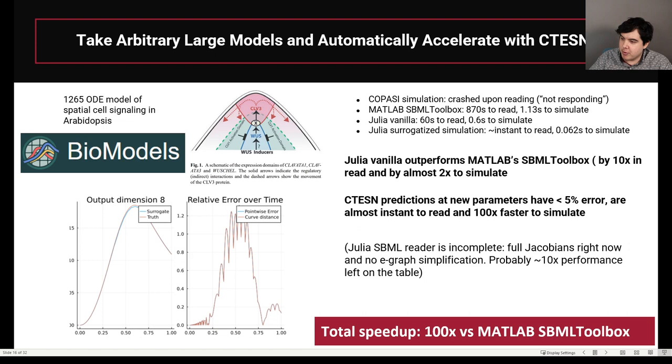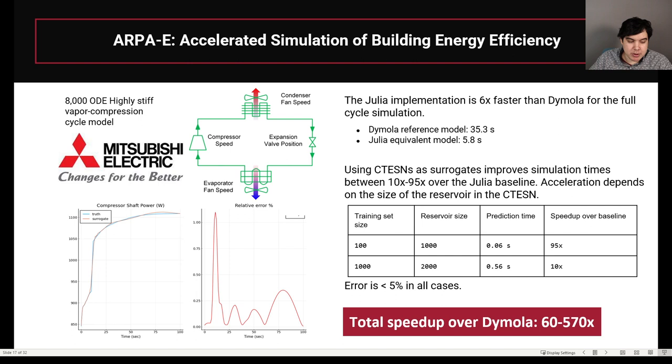On the HVAC models, what we showed was that you can get about a total speed-up over Dymola of about 60 to 570 times. Dymola is the leading compiler for the Modelica programming language. The Julia implementation of the HVAC model in the simulator itself is about six times faster because of the improved differential equation tools that I mentioned at the beginning. When you take the echo-state network and you train it, you're able to keep your error below 5% over the full time span. When predicting at new parameters, with this behavior at below 5% error, that's when you're able to see this 60 to 570 times speed-up. You can predict the behavior of the HVAC and the controllers basically faster than real time by using this trained continuous-time echo-state network.